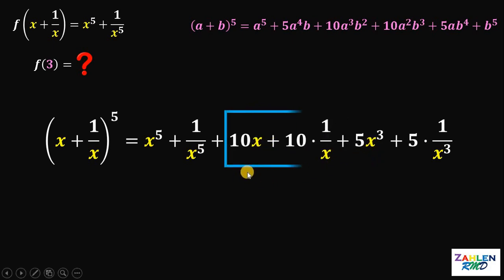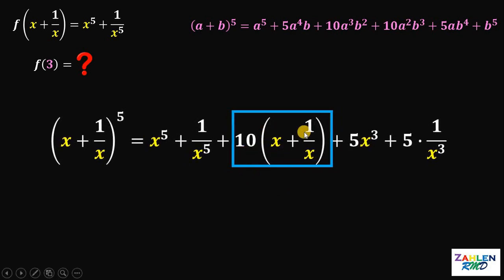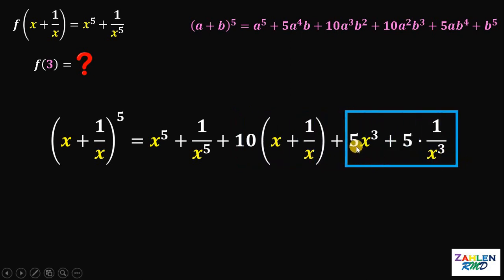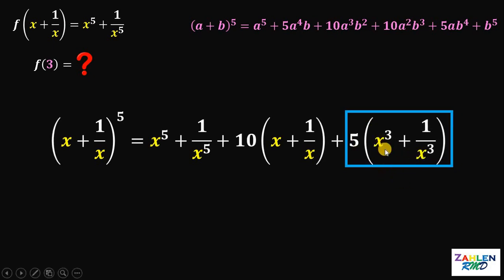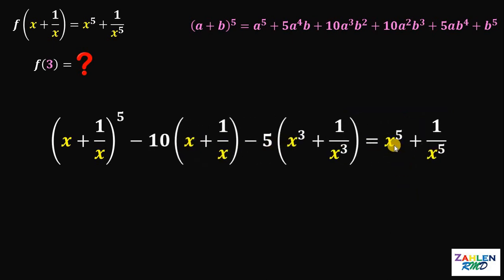Focusing on the middle terms: we have 10x + 10/x. Since 10 is common, we factor it out to get 10(x + 1/x). For the last two terms, we factor out 5 to get 5(x^3 + 1/x^3). To isolate x^5 + 1/x^5, we subtract 10(x + 1/x) and subtract 5(x^3 + 1/x^3) from both sides. This gives us the value of x^5 + 1/x^5.